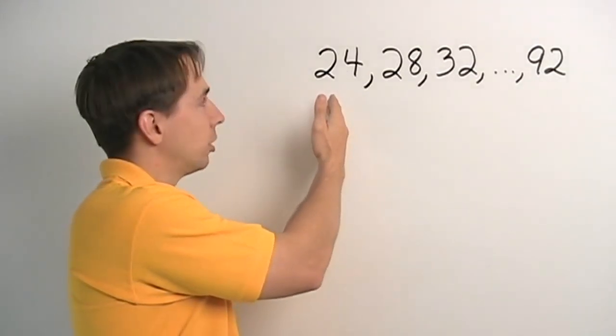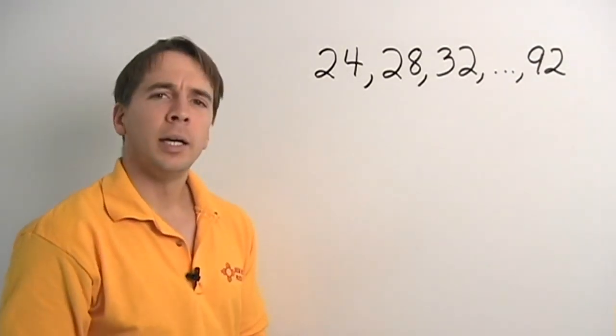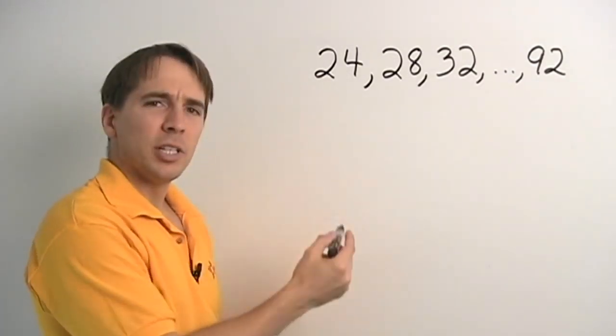We go up by four each time. We start at 24, we go to 28, 32, and say we keep going all the way up to 92. How do we count the numbers in this list?